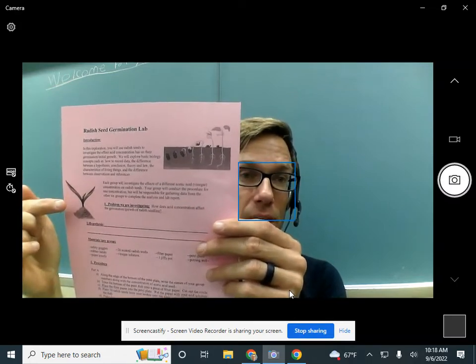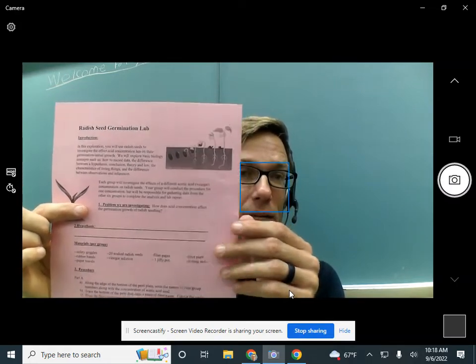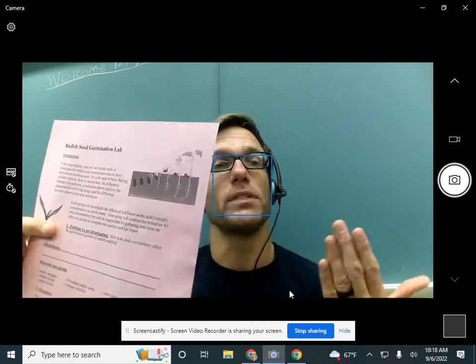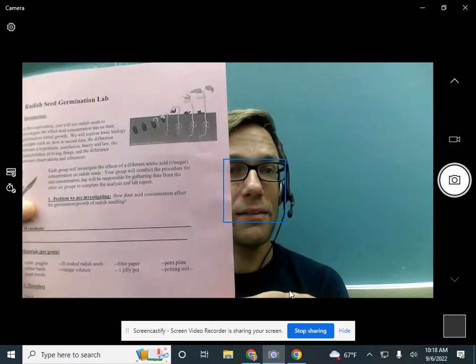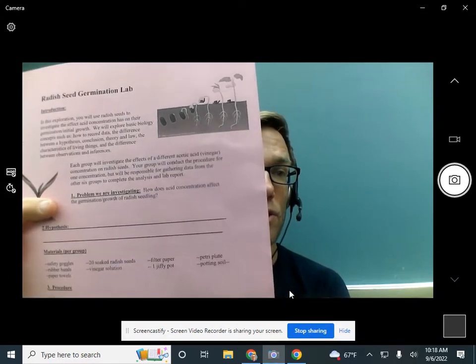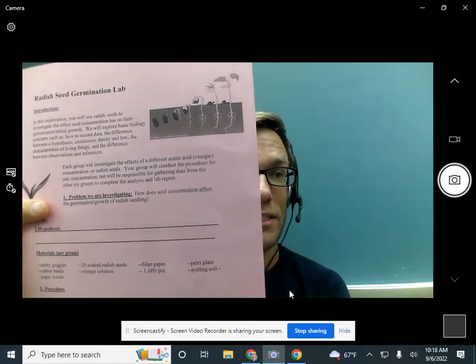Please read the introduction. And you all know with scientific method, the first thing we have to do is identify what we don't know. That's called stating the problem. So we're going to investigate how does acid concentration affect the germination or growth of radish seedlings.